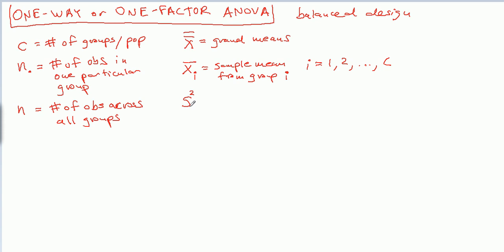S squared, that's sample variance, with a little subscript i, is going to indicate that this is the sample variance from group i. Again, i going 1, 2, up to C. Of course, if I'm talking about variance, I can also talk about standard deviation. So S, without the square, is the sample standard deviation. I put a little subscript, now I'm talking about the sample standard deviation from or for group i.